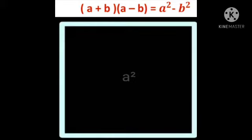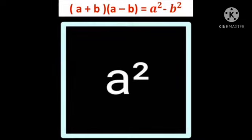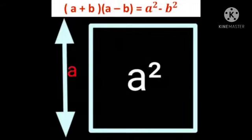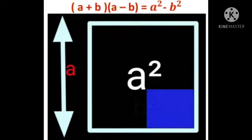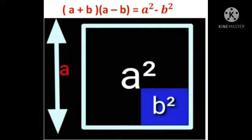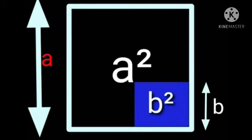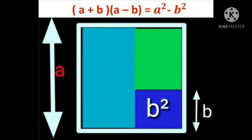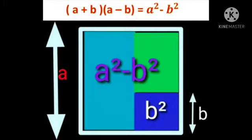To prove that, first construct a square whose area is a², with each side equal to a units. Now subtract a small square whose area is b², which has length b units. Now look at the shaded portion — it represents a² - b².